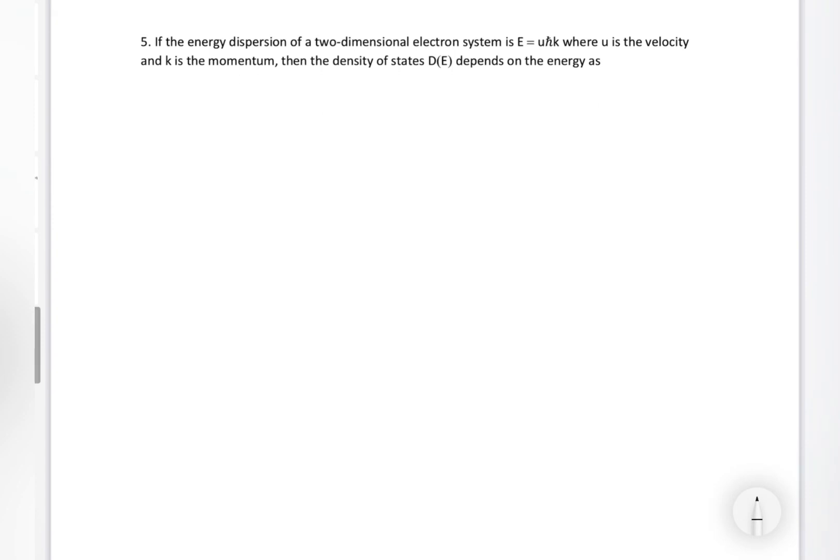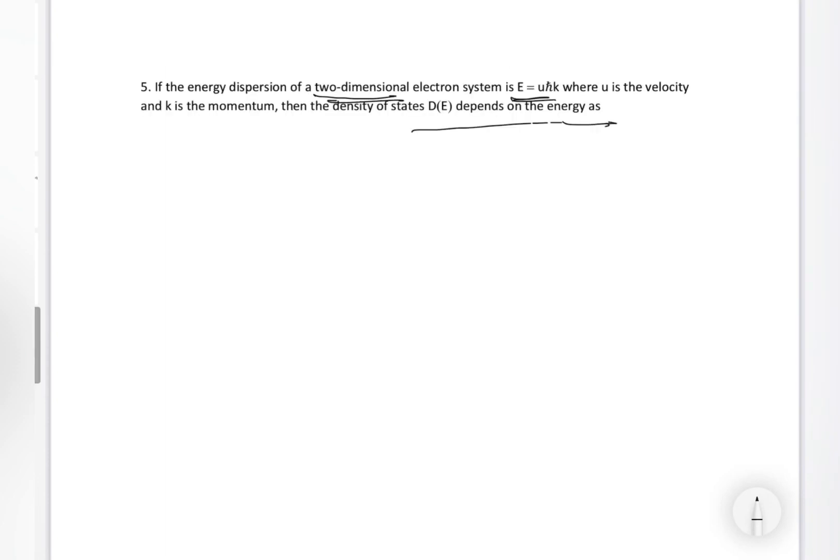If the energy dispersion of two-dimensional system E = U·ħ·k, again we have got an energy dispersion, where U is the velocity, k is the momentum, the density of states depends on energy. What is the density of states' dependence on energy? This is the question. And second thing is, it is a two-dimensional system. Just now we were reading about that, right?